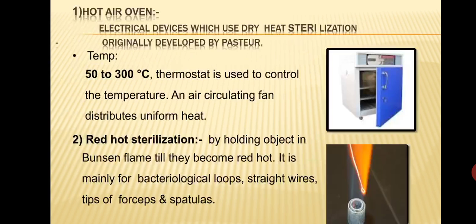Red hot sterilization involves holding an object in a Bunsen flame until it becomes red hot. This kills surface microorganisms effectively and is used mainly for bacteriological loops, straight wires, tips of forceps, and spatulas.